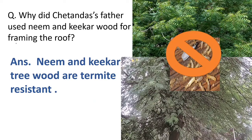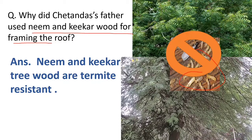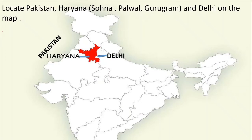Why did Chetan Das's father use neem and keeker wood for framing the roof? Neem and keeker tree wood are termite resistant, so the reason they used these woods is that they are termite resistant.